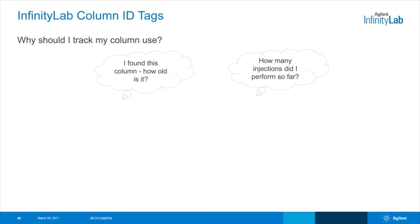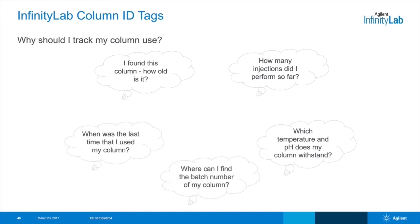There are many questions that come up during method development in regards to the column you're using. Why should I track my column use? Does it make sense to use this column, or should I use a fresh one to get reliable results? If you're troubleshooting, is the problem caused by my column, or is there a different issue? Some of the questions you might ask yourself include: how old is this column? How many injections did I perform so far? Which temperature and pH does my column withstand? Where can I find the batch number of my column? When was the last time that I used my column?